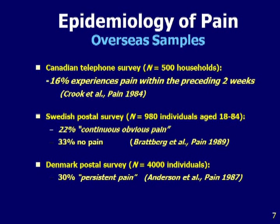Pain is not limited to the United States. In a Canadian survey of 500 households, 16 percent experienced pain within the preceding two weeks. In a Swedish survey, 22 percent had continuous obvious pain — another way of saying chronic pain — and it was 30 percent in a Danish survey. So here we see consistency across countries: somewhere between 16 and 30 percent of people suffer from chronic pain.